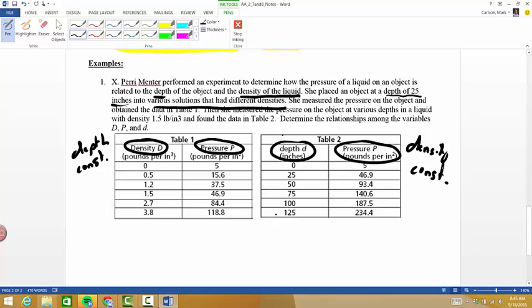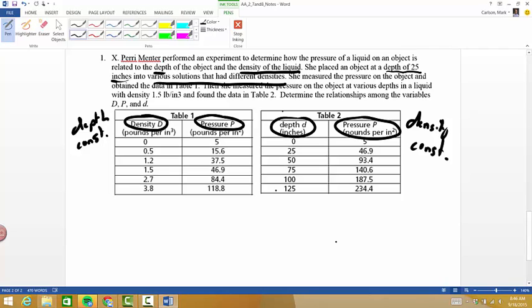So what we're going to do is we're going to look at each of these charts individually to see if we can come up with a general equation for each one of them first. All right, so let's look at table one and let's see if we can find the relationship, the general relationship between density and pressure. And to do that, what I'm going to do is look at my x values and try and find one that was pretty easy multiplication. Now I could do it with any of them.